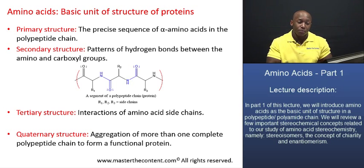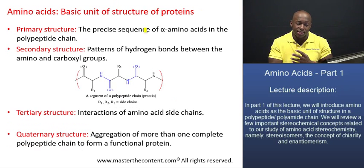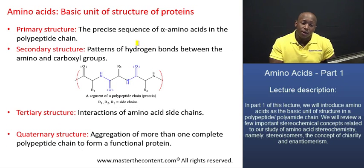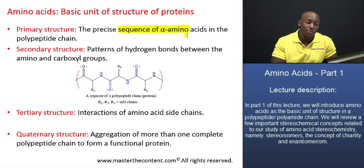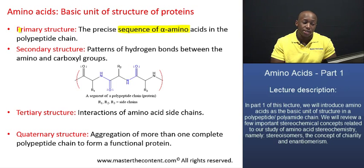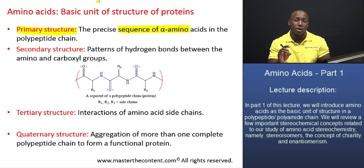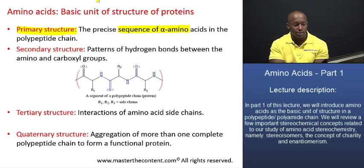The precise sequence — that exact sequence of amino acids in the polypeptide chain — is what we refer to as the primary level of structure. That is the primary level of structure in a protein: it refers to the exact sequence of amino acids in the polypeptide chain.